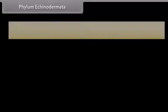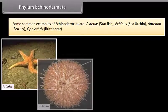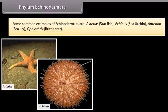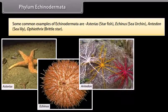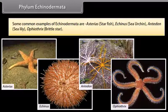Some common examples of Echinodermata are Asterias (starfish), Echinus (sea urchin), Antedon (sea lily), and Ophiothrix (brittle star).